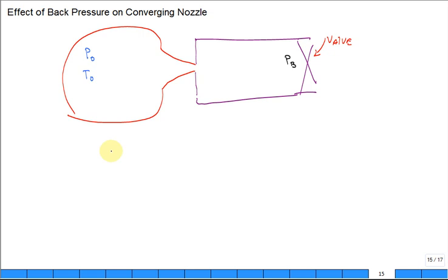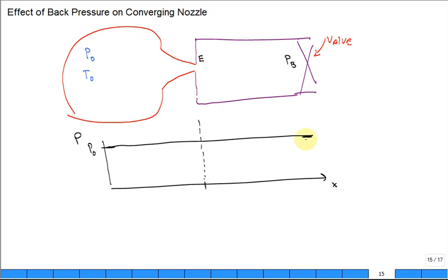So, if I wanted to plot as a function of location X, where this location lined up with the exit from the nozzle, and over here was just, I'm going to plot pressure. So, it's P naught way over here. Let's say I have the valve closed. What is the back pressure equal to? The same as P naught, flat. Pretty boring. No flow. Is the M dot zero? There's no flow through it. No flow.